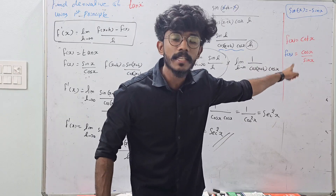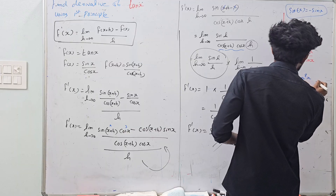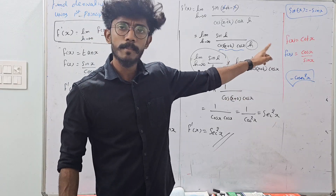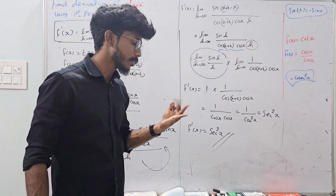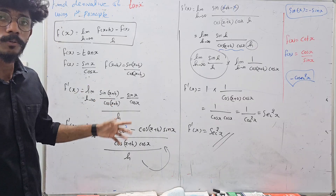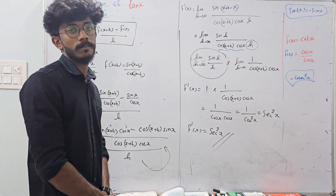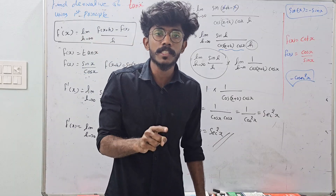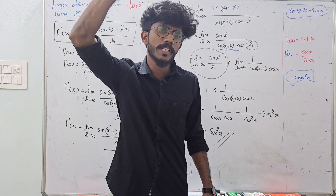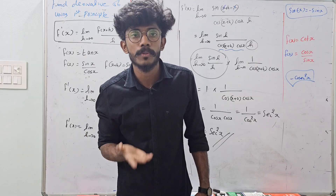The answer is minus cosec²x. If you learn the question, you will get the answer. This section is very important. In the first principle, there is a question. The other chapters will be uploaded. There is a link in the description. Bye!